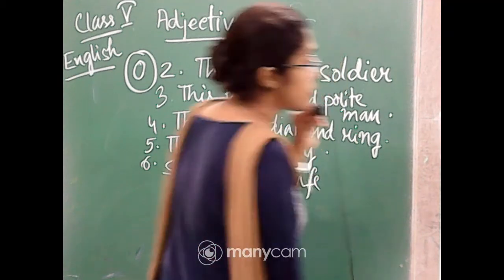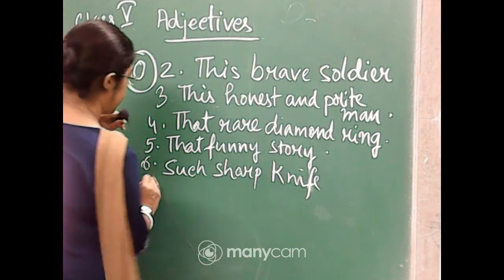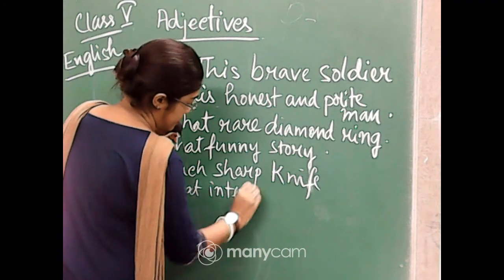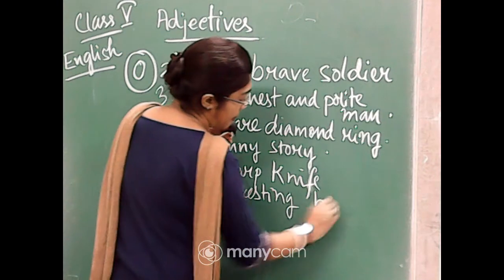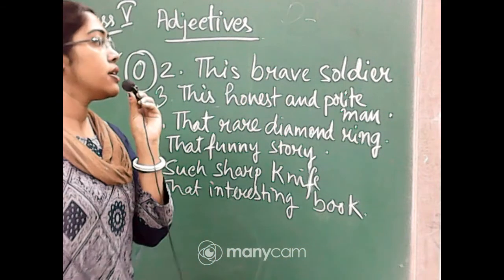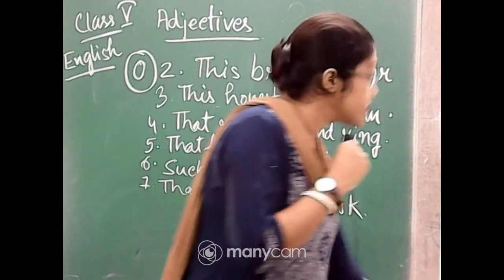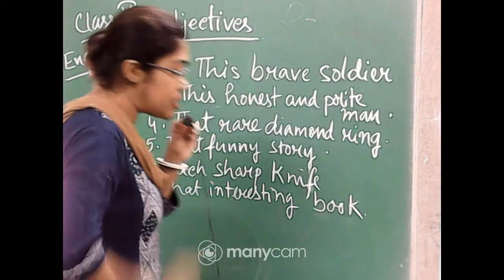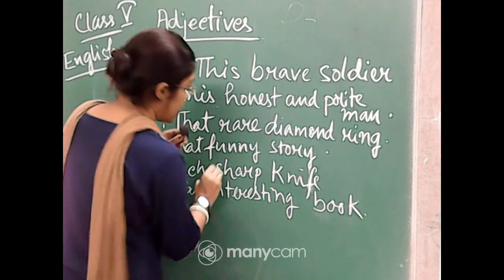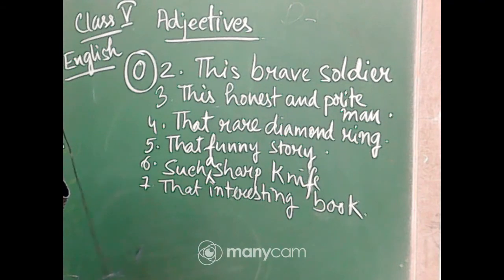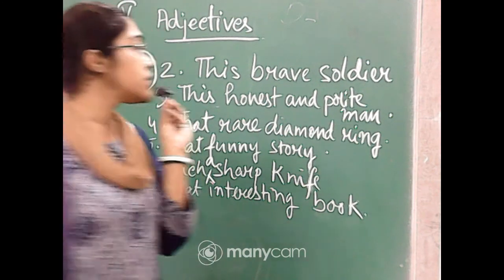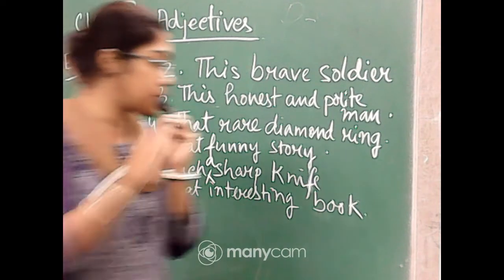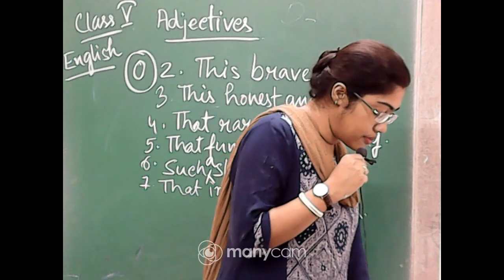Number seven: 'those interesting books' becomes 'that interesting book.' For number six, it will actually be 'such a sharp knife.' With 'such,' you have to use one article for making it singular. If it is in plural then you don't need an article, but for singular you have to use one article.